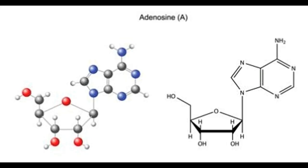Adenosine is a purine nucleoside consisting of an adenine molecule attached to a ribose sugar via a glycosidic bond. Its molecular formula is C10H13N5O4. Its IUPAC name is (2R,3R,4S,5R)-2-(6-aminopurine-9-yl)-5-(hydroxymethyl)oxolane-3,4-diol. It forms a nucleotide of DNA and RNA by the formation of phosphodiester bonds between phosphate groups of adjacent bases. In addition to this, it has been observed to function as an analgesic, a vasodilator, and an antiarrhythmic agent.